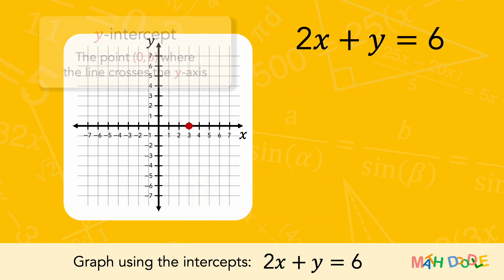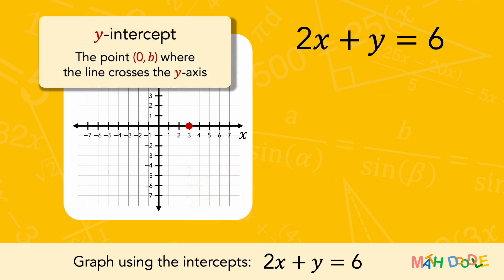Next, let's find the y-intercept. At the y-intercept, x is 0. So, let's substitute 0 for x and solve the equation for y. The equation is simplified to y equals 6.